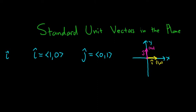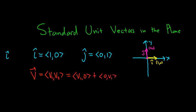These are really useful because you can do stuff like this. Say I have a vector v written in component form: <v1, v2>. You can write this as <v1, 0> plus <0, v2>. You can check that the addition works: v1 plus 0 is v1, and 0 plus v2 is v2. So the addition checks out.